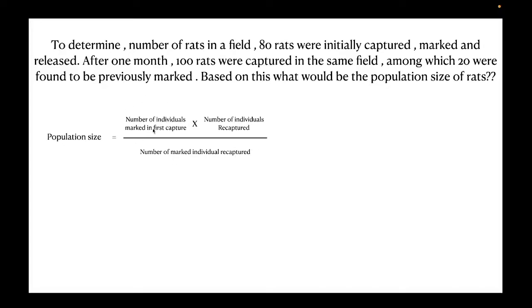Now the number of individuals marked in the first capture would be 80 rats. That is, 80 were initially captured, marked and released. So this is going to be 80, multiplied by number of individuals recaptured. This is 100 because after one month, we recaptured 100 rats from the same field. Now number of marked individuals recaptured, that is 20.